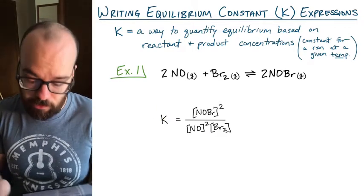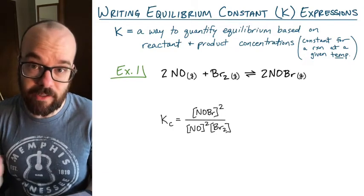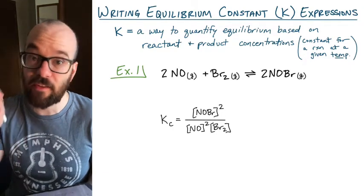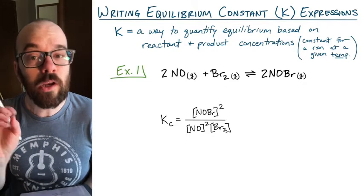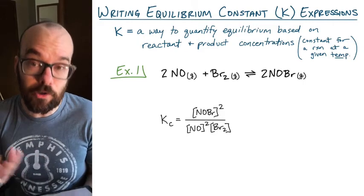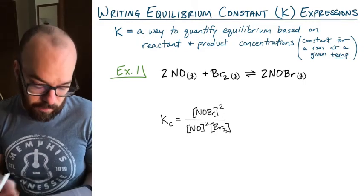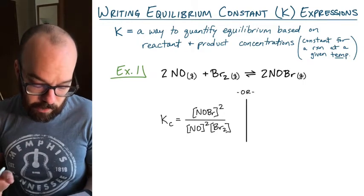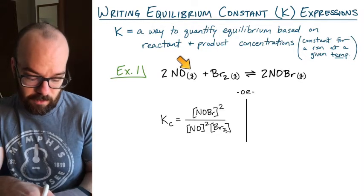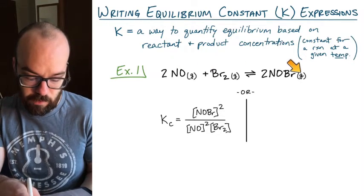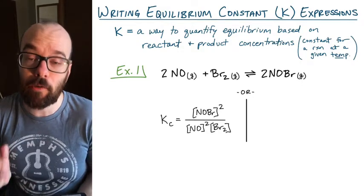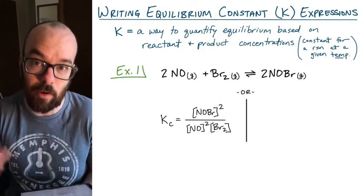Because we're using concentrations, we might designate this as K sub C — that signifies concentration. We can also write an equilibrium expression in terms of partial pressures of gases, and for this reaction, since everything is a gas, we could write either a Kc expression or a Kp expression based on partial pressures.